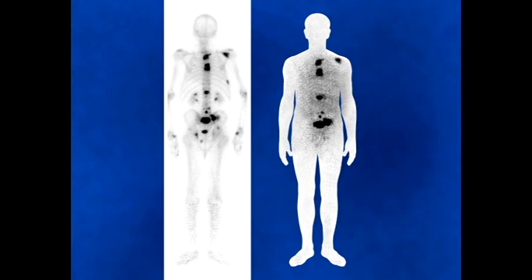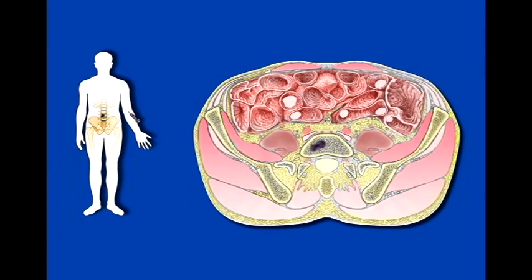Radioimmunotherapy involves the practice of attaching a radioactive isotope onto a monoclonal antibody, using the immune system to take that radioisotope into a cell.